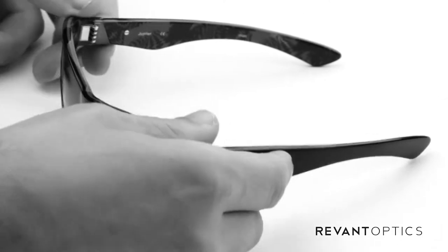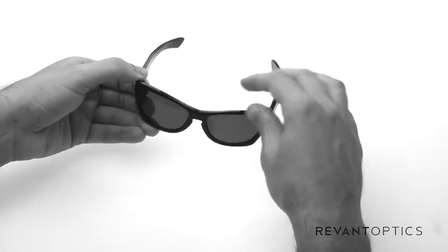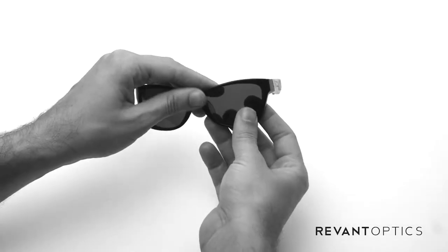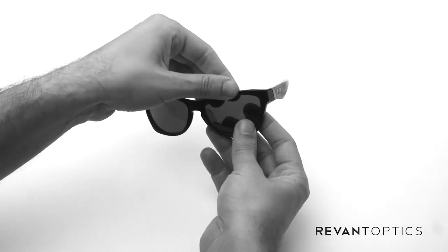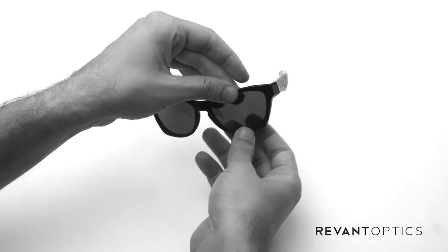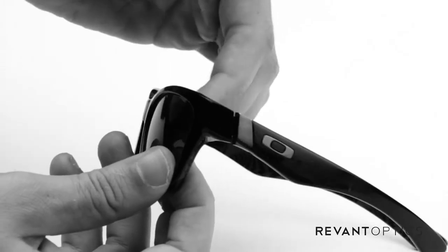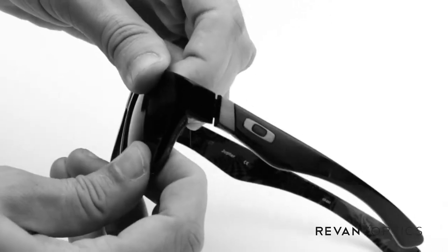This particular frame is made of acetate, it's a more rigid material, and the way you're going to remove the lenses is you're going to pull up on the top edge of the frame here, and down on the bottom edge of the frame here, and push through the back side of the lens with your fingers.